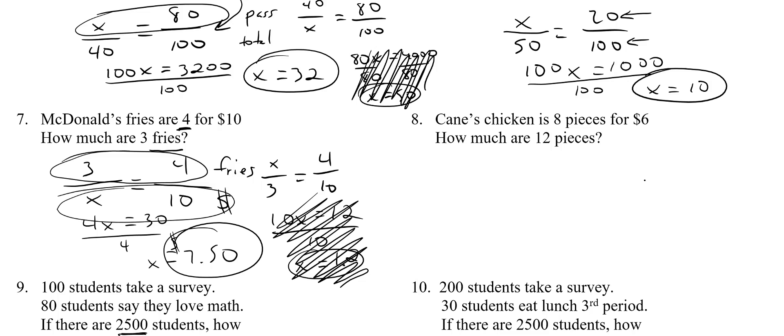Cane's chicken. Notice it's next to the McDonald's one too. Very exciting. Cane's chicken is 8 pieces for $6. So it's 8 pieces for 6 bucks. This is pieces on top, and this is dollars on the bottom. How much are 12 pieces? So put 12 on top and x on the bottom because it's a dollar amount. So 8x equals 72 divided by 8, x equals 9. So 12 pieces is $9.